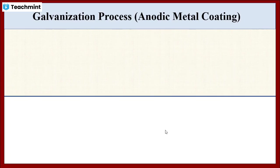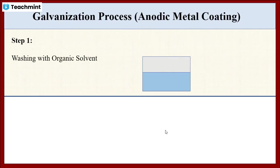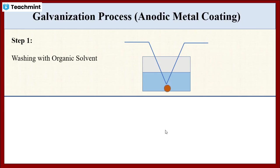The galvanization process is carried out using six steps. In the first step, the metal steel is washed with organic solvents like benzene. This organic solvent removes the oils, grease, or fatty substances from the surface of the metal steel.